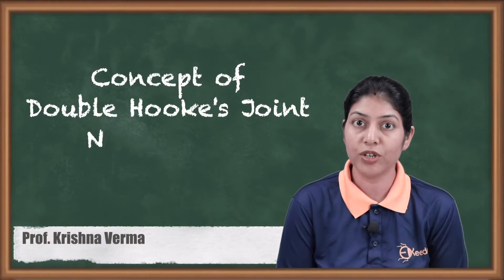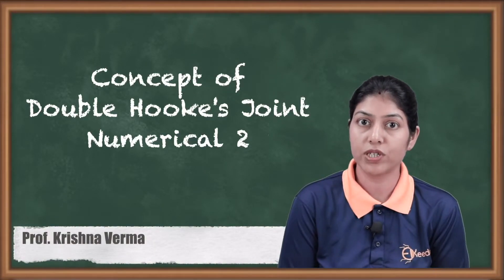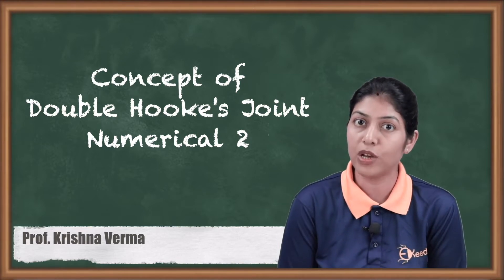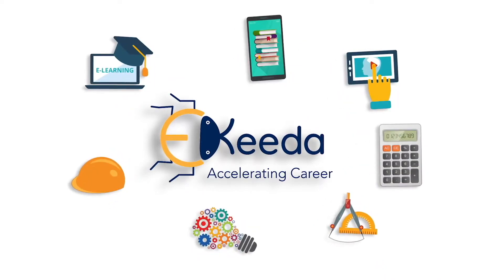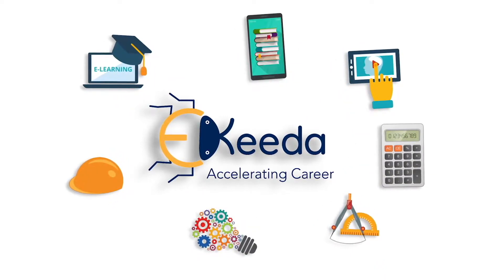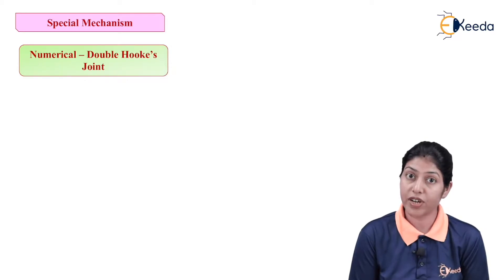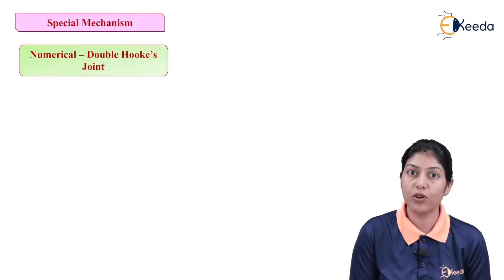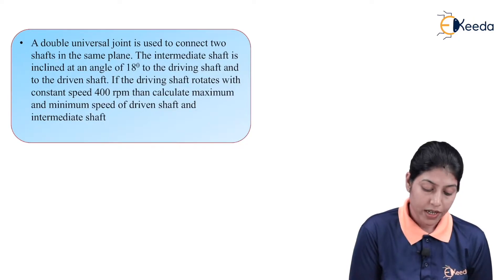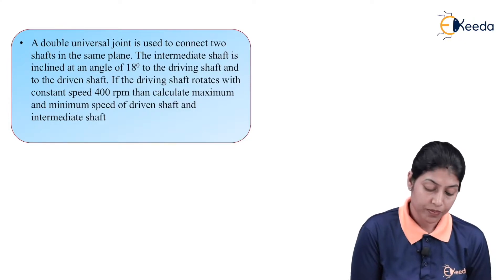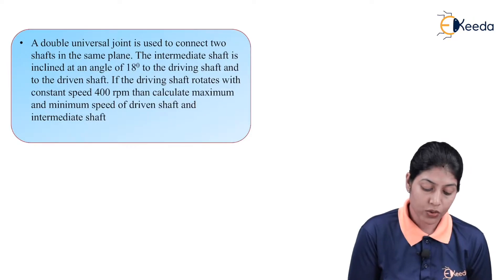Hello friends, in this video I am going to discuss one numerical which is related to concepts of double Hooke's joint. The numerical is: a double universal joint is used to connect two shafts in the same plane. The intermediate shaft is inclined at an angle of 18 degrees to the driving shaft and the driven shaft.